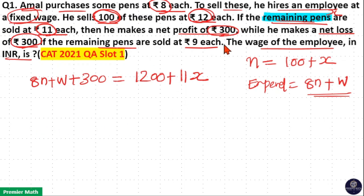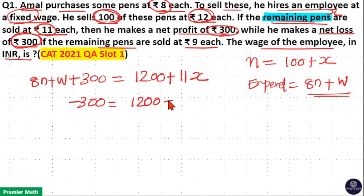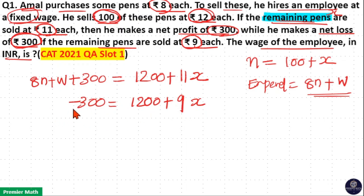In the second case, he makes a loss of Rs. 300. Loss means minus 300. When he sells 100 pens at Rs. 12 each — that is 1200 — plus the remaining pens X at Rs. 9 each, that is 9X. When he sells at this selling price, he makes a loss of Rs. 300. Loss of 300 means selling price is Rs. 300 less than the expenditure, where expenditure is 8N plus W.